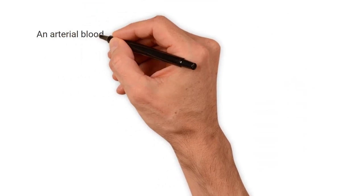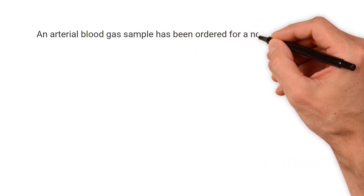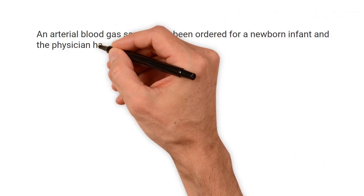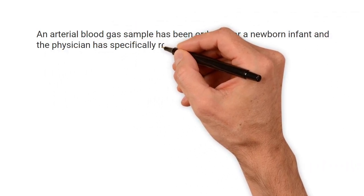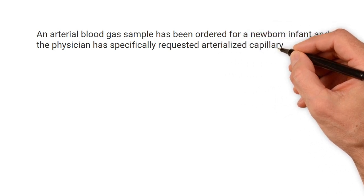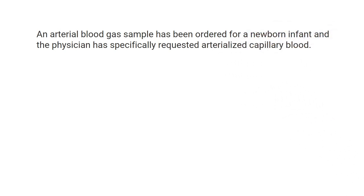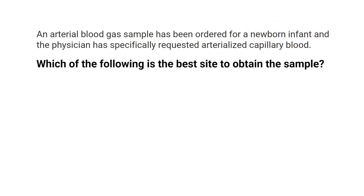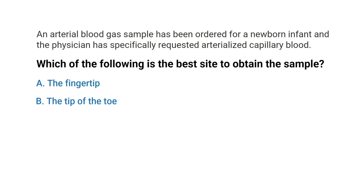An arterial blood gas sample has been ordered for a newborn infant, and the physician has specifically requested arterialized capillary blood. Which of the following is the best site to obtain the sample? A) The fingertip, B) The tip of the toe, C) The lateral area of the heel, or D) The earlobe?